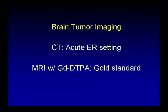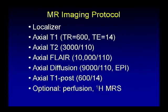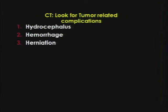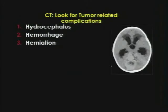For brain tumor imaging, CT is still the first line of defense when a patient presents with seizure in the emergency room, but I do not recommend CT as the gold standard to characterize brain tumors — MRI is so much better. When you look at CT, look for three H's: hydrocephalus, hemorrhage, and herniation. CT is incredibly good for these three. Here's a child with a large posterior fossa mass and transependymal CSF — already you know there's a mass and hydrocephalus.